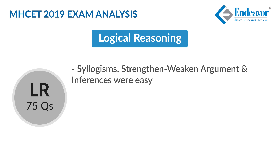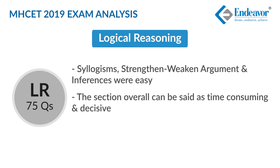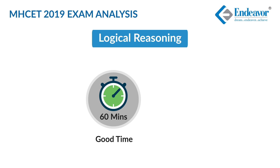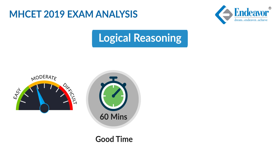Syllogisms, if practiced well, were an easy piece of cake, along with strengthening and weakening arguments and inferences, if verbal logic were practiced on a good note. Overall, this section was time-consuming and could have been the game-changer. The ideal time for this section could be 60 minutes. The level of difficulty is determined to be moderate to difficult, with ideal attempts of 42+ and an ideal score of about 37+.